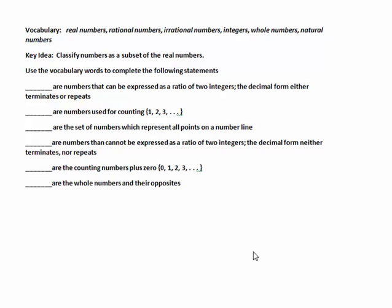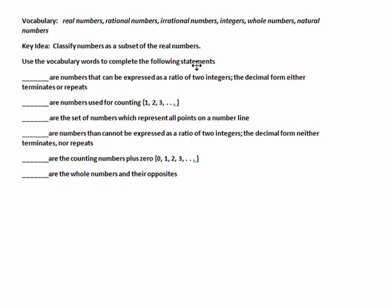I left the vocabulary list there, and here it says to use the vocabulary words to complete the following statements. In an effort to make this a little bit nicer, I'm going to denote the real numbers with an R, the rational numbers with a Q, irrational numbers with an I, integers with a Z, whole numbers with a W, and the natural numbers with an N.